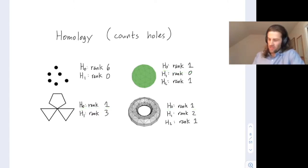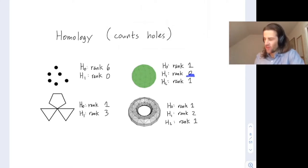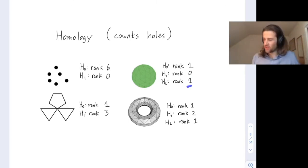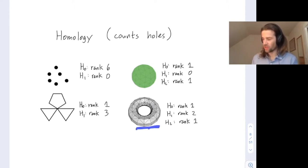One-dimensional homology counts loops — this space has three loops. On a sphere, any loop I draw can be shrunk down to a point, so it has no essential one-dimensional loops. The sphere, however, has a void inside — a two-dimensional hole; you could fill it with jelly and the jelly doesn't spill out. A hollow torus has two one-dimensional loops and also a two-dimensional void. Given a simplicial complex, you can compute the homology quite quickly using linear algebra.